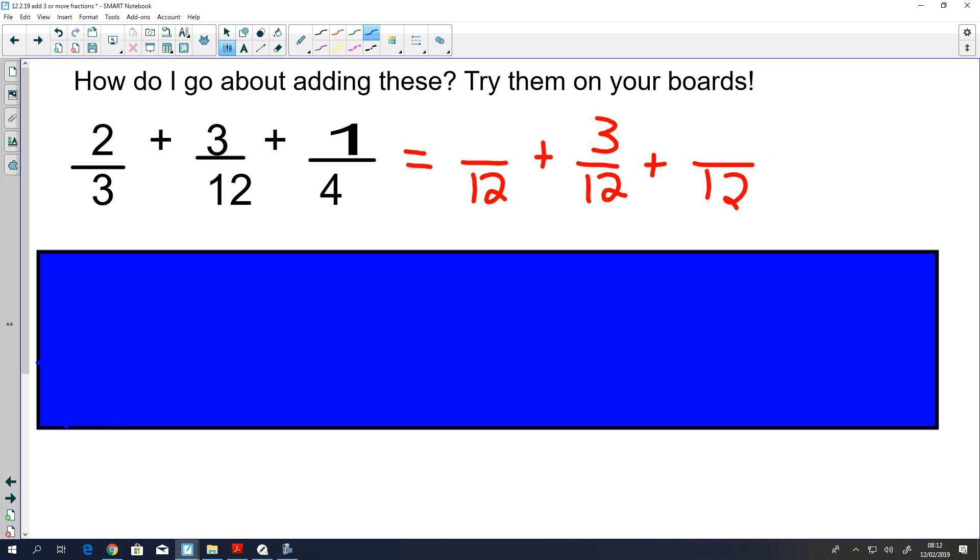Now all I have to do is think, how did I get from here to here? I multiplied by 4, so I must do the same with the top. 2 multiplied by 4 is 8. And then I think, how did I get from here to here? Multiplied by 3, so I must do the same over here. That's going to end up becoming a 3.